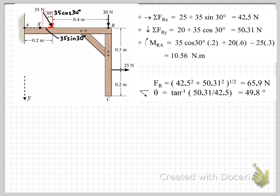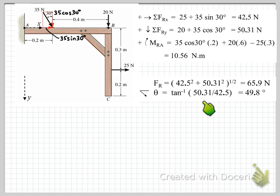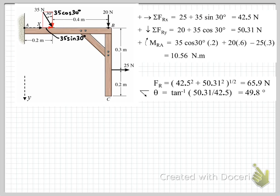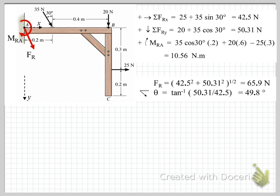Using Pythagoras' theorem we find the resultant force from our two components: √(42.5² + 50.31²) = 65.9 Newtons. We can also work out the angle using inverse tan of the opposite over adjacent: 50.3 divided by 42.5 gives an angle of 49.8 degrees. Drawing that on our diagram: the resultant force FR equals 65.9 Newtons at 49.8 degrees, and the resultant moment MR equals 10.56 Newton meters.